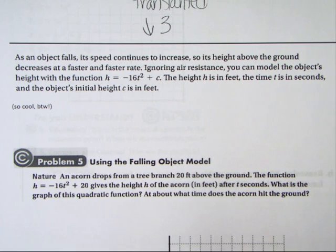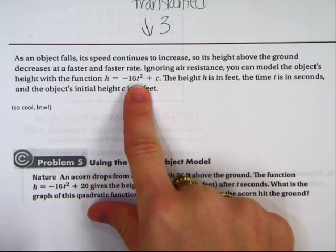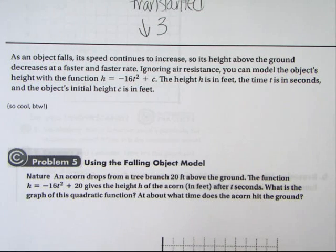Ignoring air resistance, so pretend that you didn't have any air resistance affecting. You can model the object's height with this function. And this is always true. The height h is in feet and the time t is in seconds. And the object's initial height is c in feet. This is pretty cool.